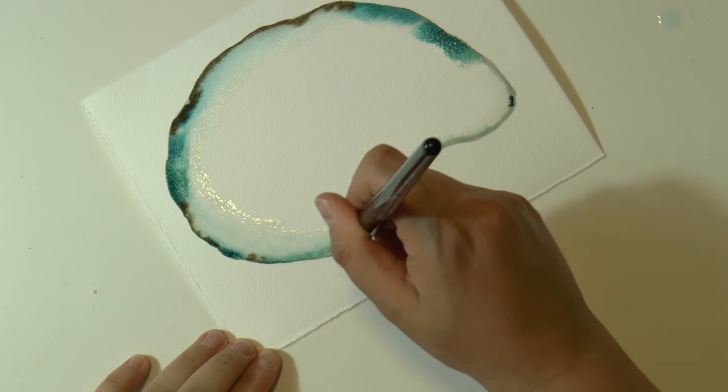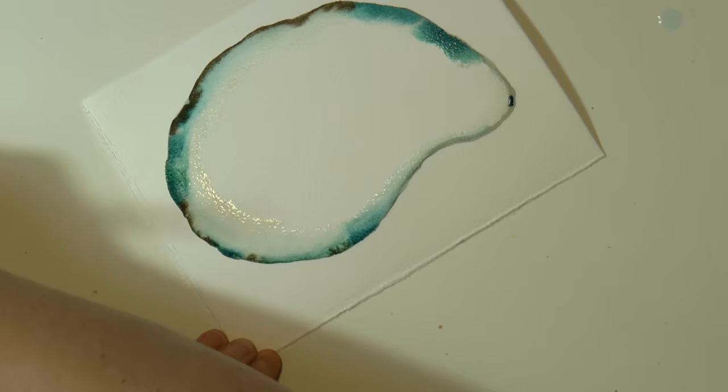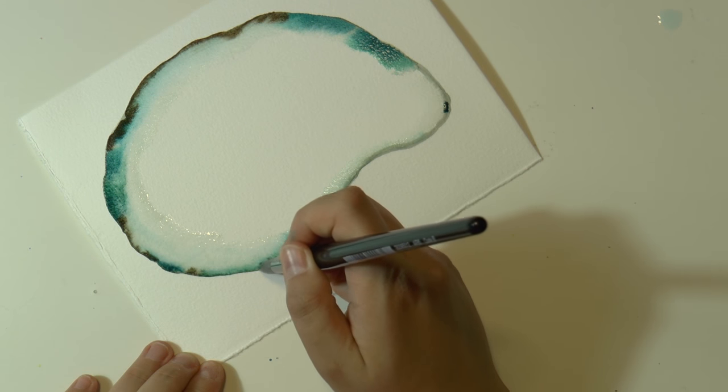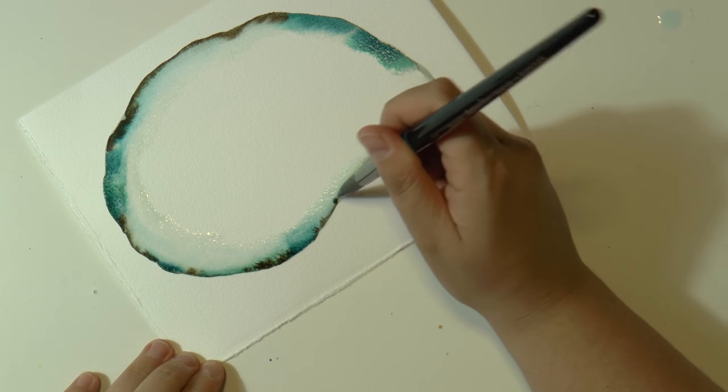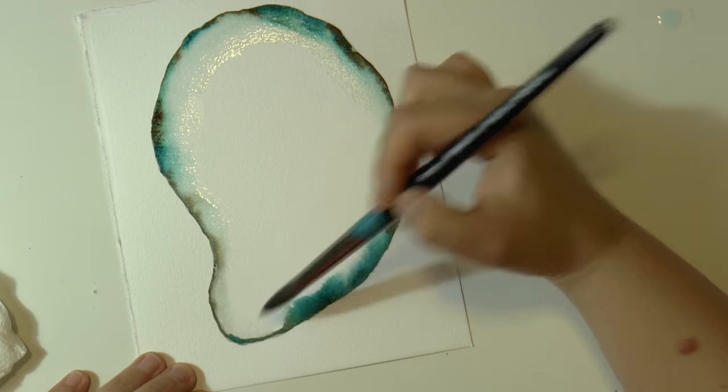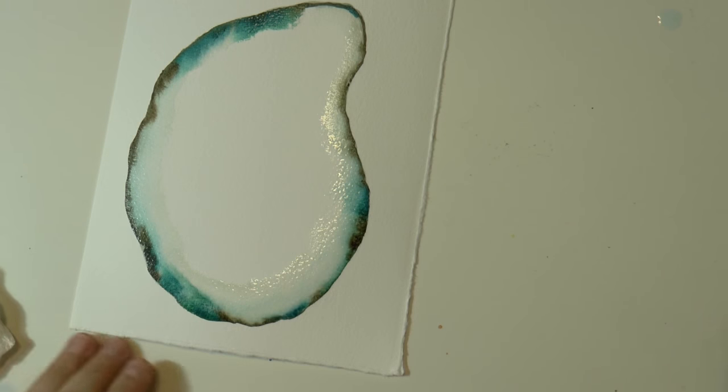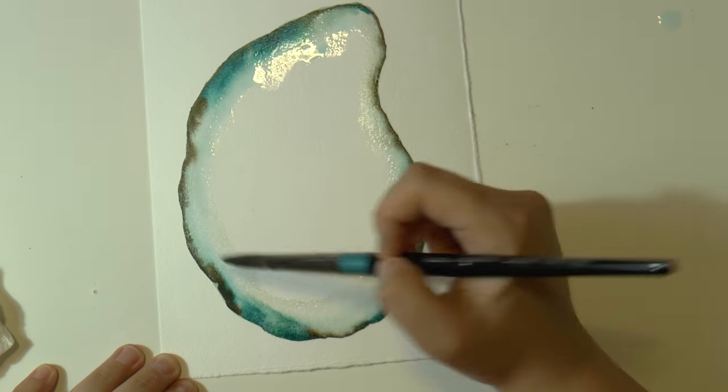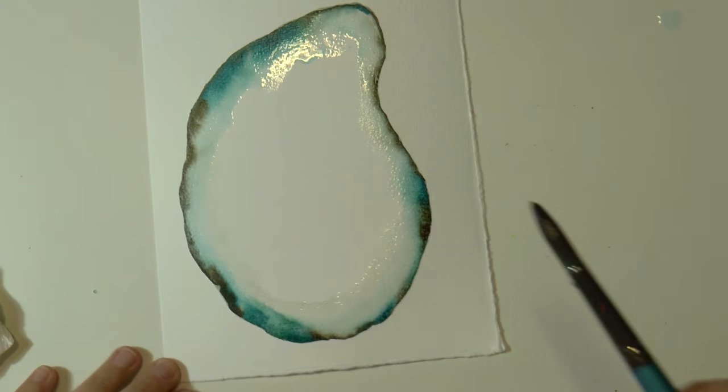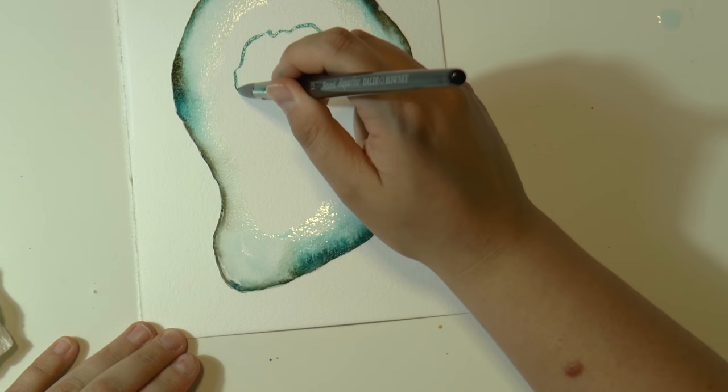And as you can see I'm not coloring all over but just putting my color in some spots so that it will look more natural and then I put a little bit more of that brown muddy color.